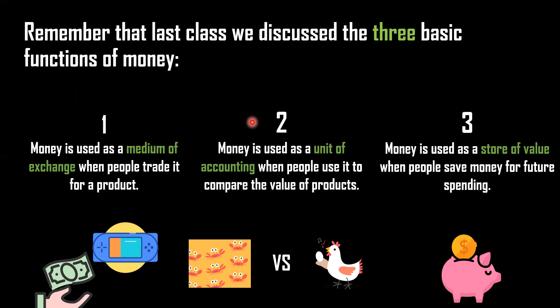When you use money to compare the prices or the value of products — like when you go with your mom to the supermarket and she tells you to find the cheapest cheese — you need to compare the value of the different cheeses. What you're actually doing is comparing the value of how much that product is worth per kilogram. That is using money as a unit of accounting.